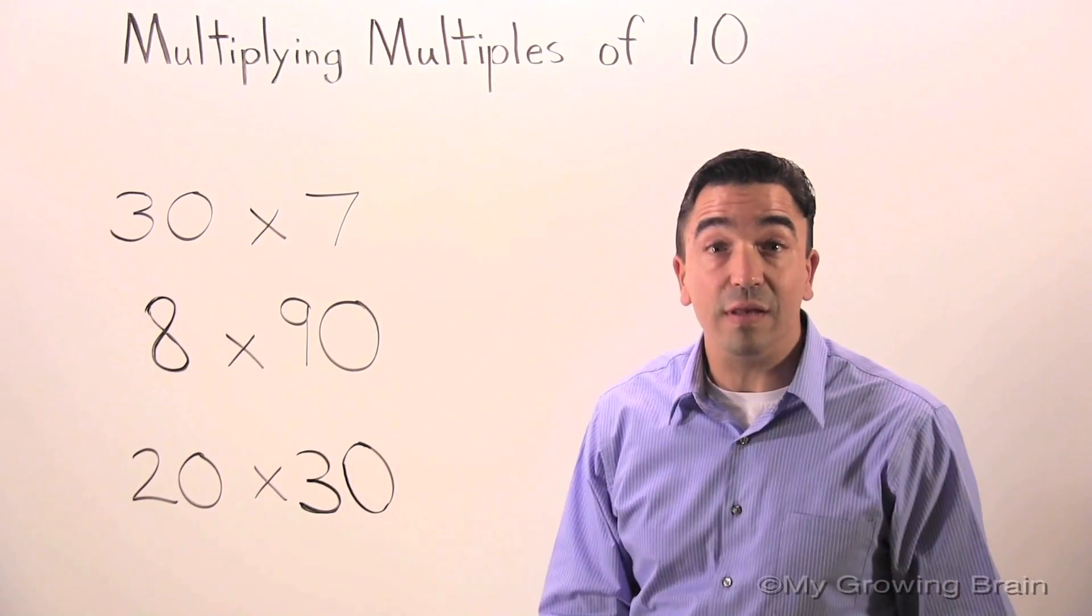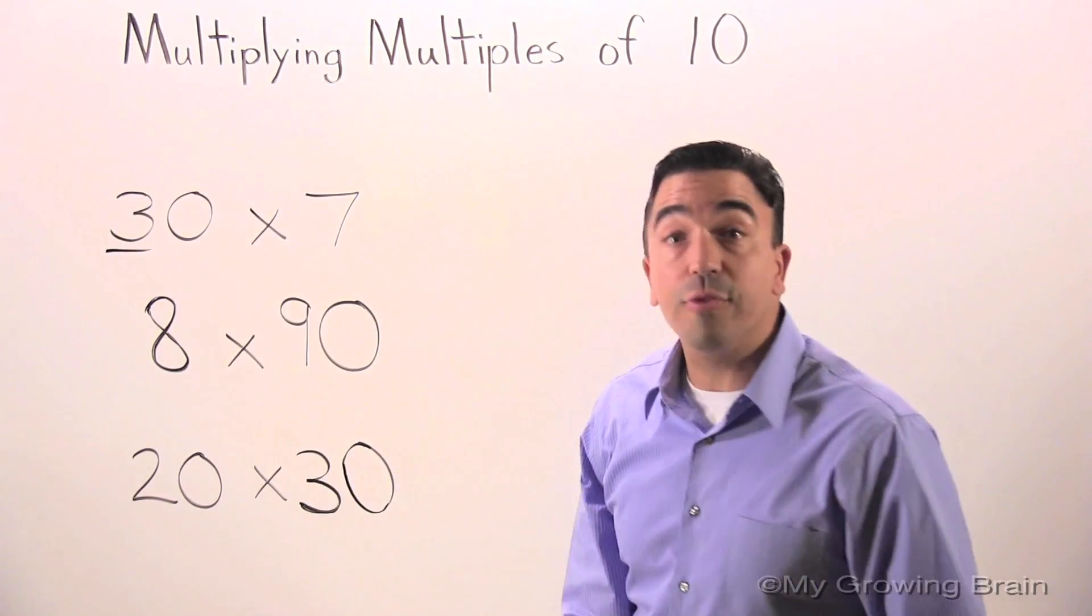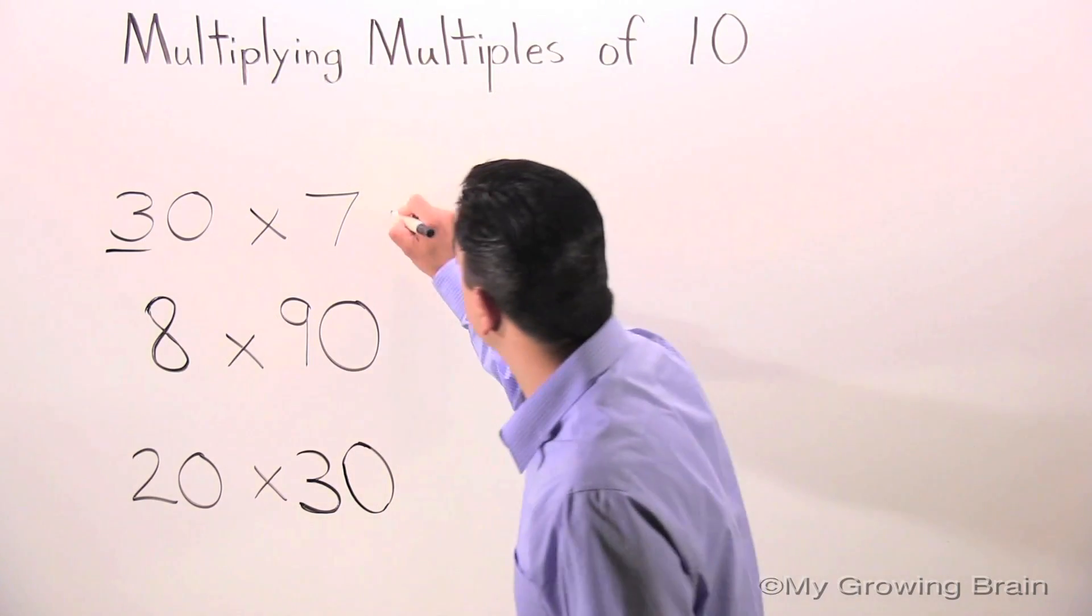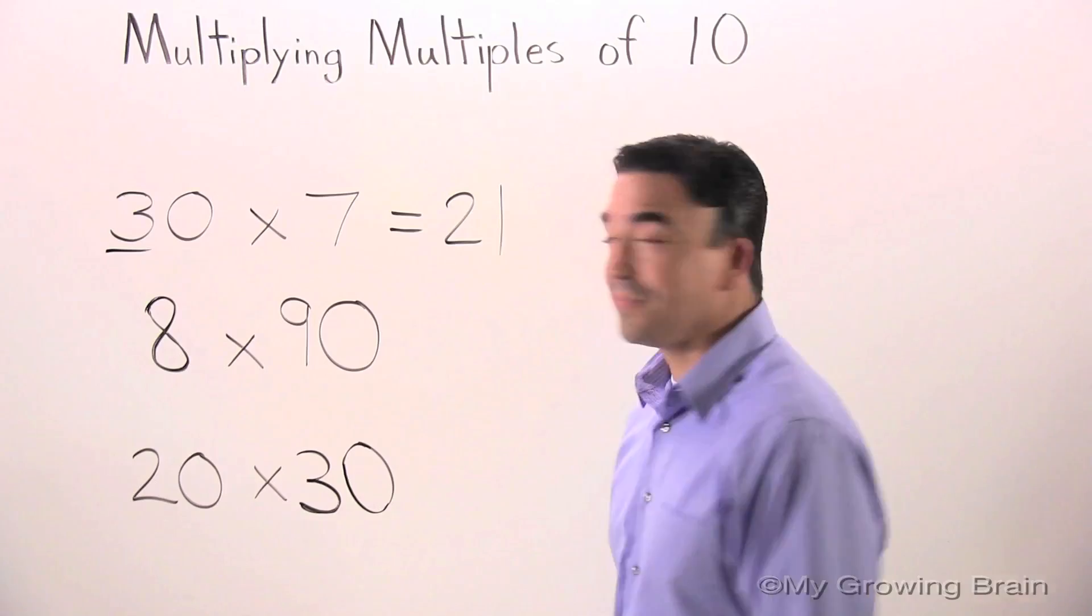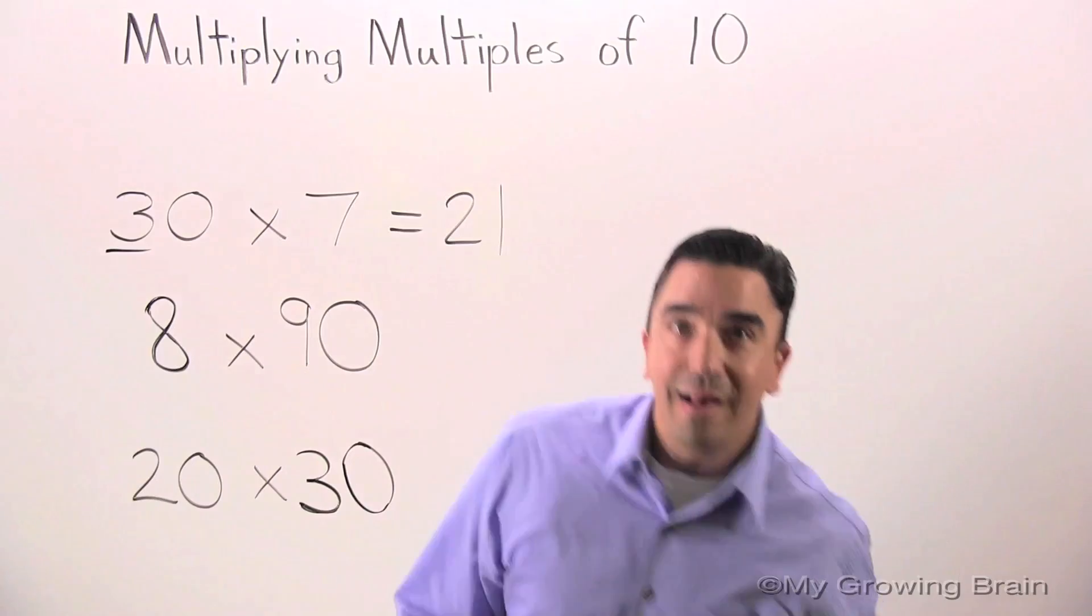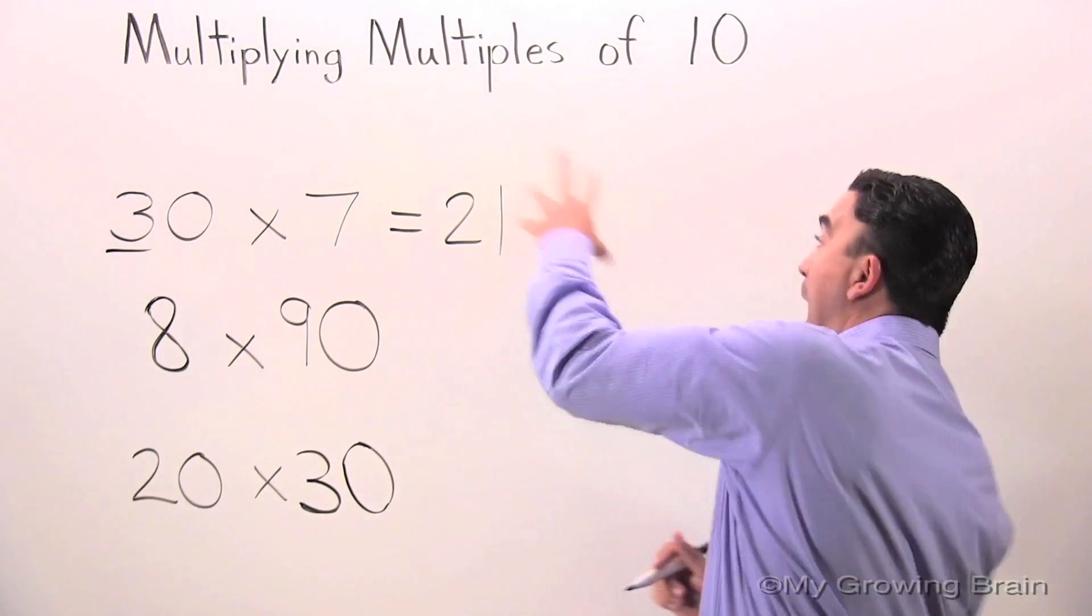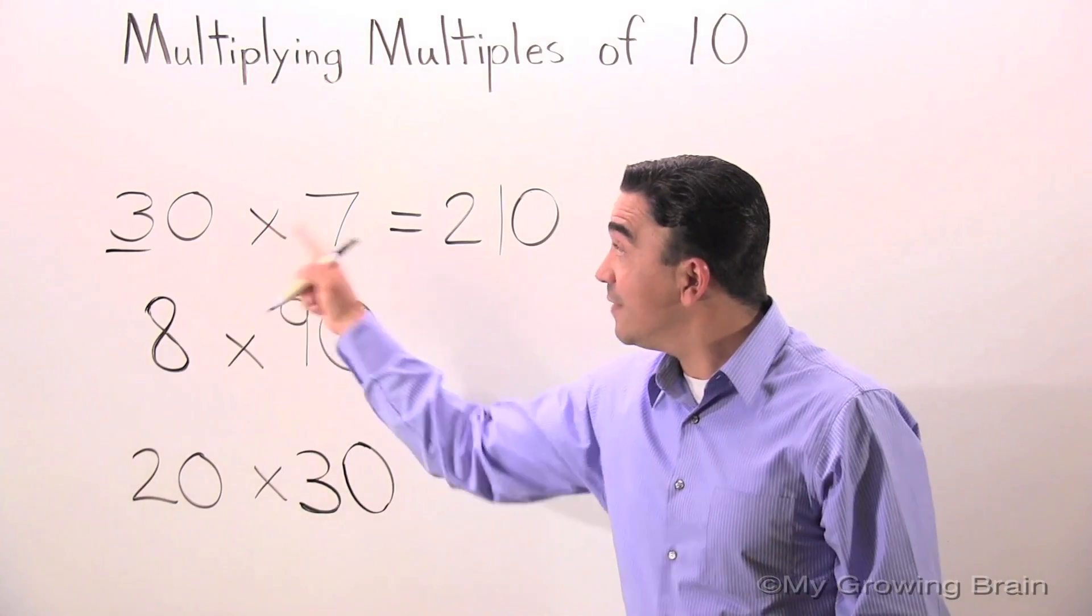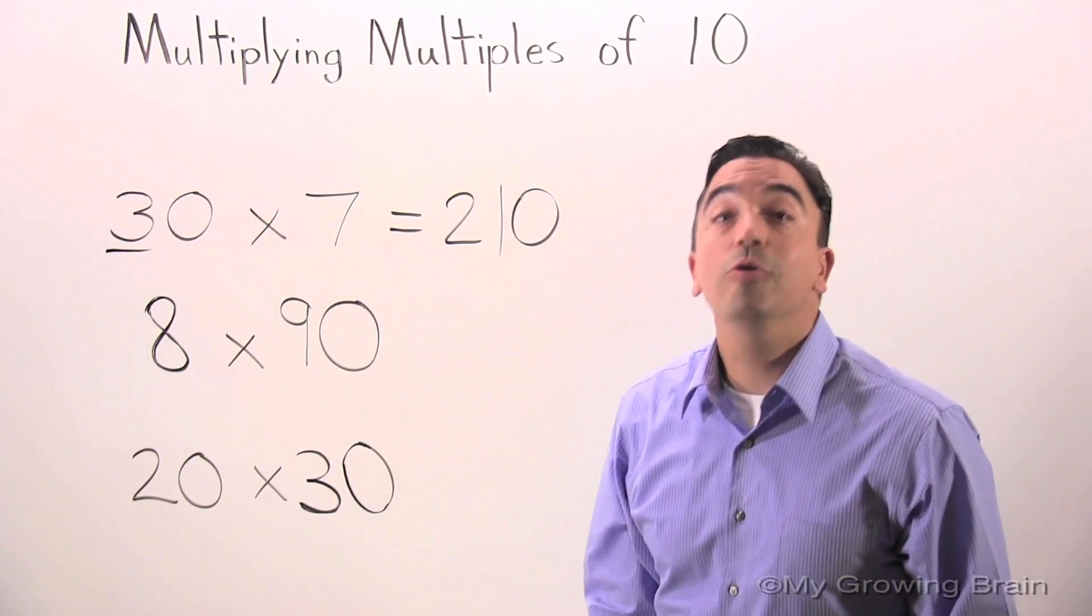30 times 7. Well, I'm going to multiply 3 times 7, which is equal to 21. I'm going to take this 10, and I'm going to pull it, and I'm going to put it over here. 30 times 7 equals 210.